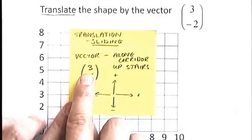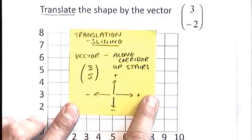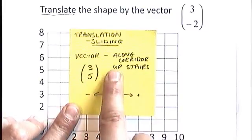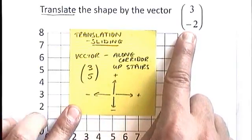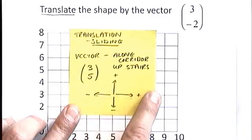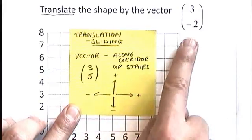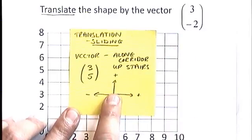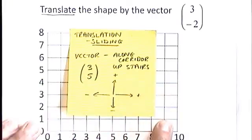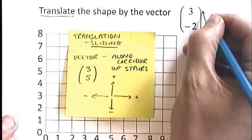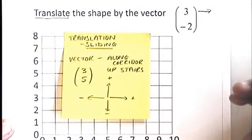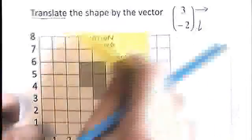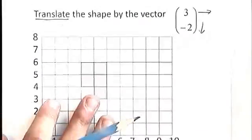You need to know also that the directions are based upon the sign of the number. So here I had a positive three along, so positive three is to the right. And then I have a five, which is a positive number, that's up. But on the vector that I'm being asked to do, I've got a three along, that's a positive three along, so I'm moving to the right. But then I have a negative two, which is a downwards motion. So I'm going to go for this question three along and then two down.